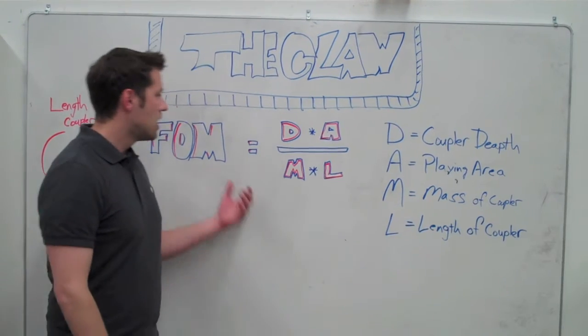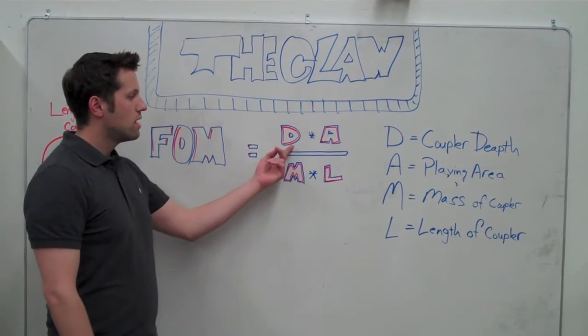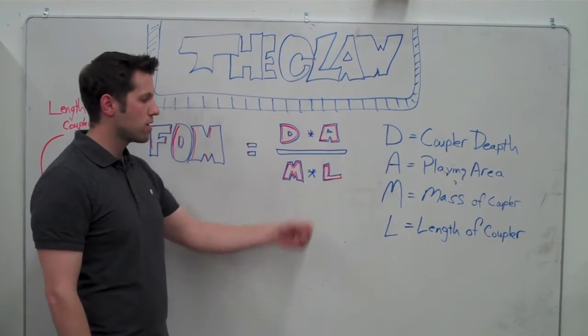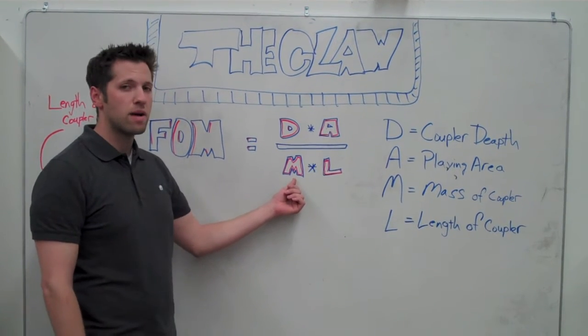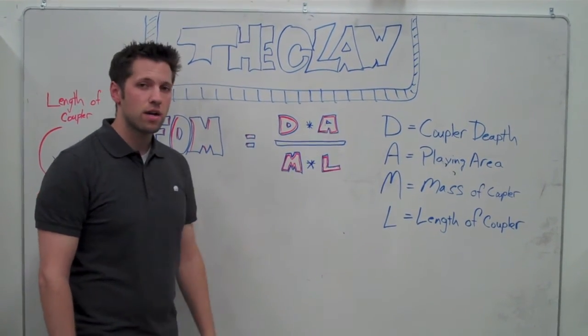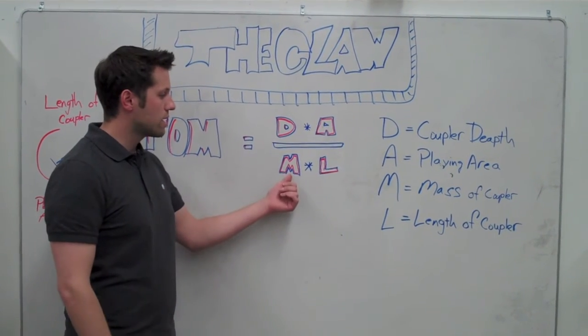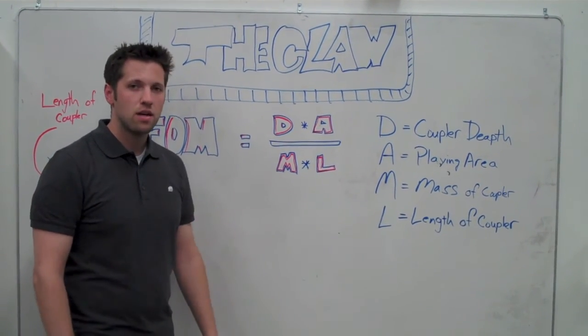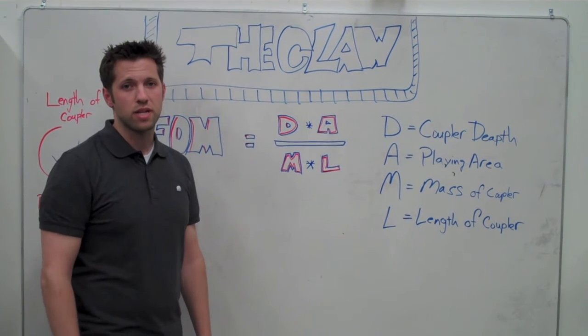Our figure of merit equation is then our depth and play area divided by our mass and length. As an increase in our depth and area will give us better grabbing potential, and our increase in mass and length will increase cost and decrease our playing area.